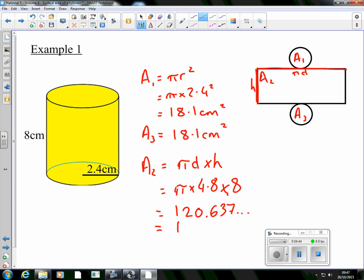It's going to give me 120.637 and so on. Round it to three significant figures, it'll be 121 centimeters squared. Okay, we're talking about area. Now even though it's part of a 3D shape, area itself is a two-dimensional thing, so centimeters squared.